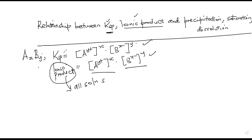However, the solubility product Ksp is only applicable to saturated solutions. The conditions that make it valid are: the salt must be sparingly soluble, the solution must be saturated, and it must be at a constant temperature. So Ksp is only valid for sparingly soluble salts.